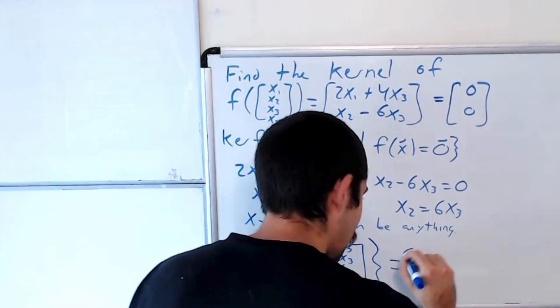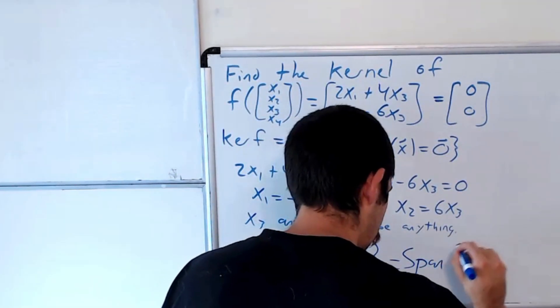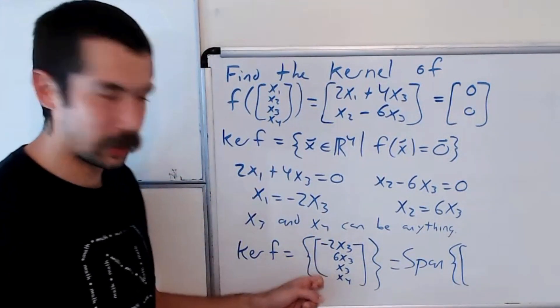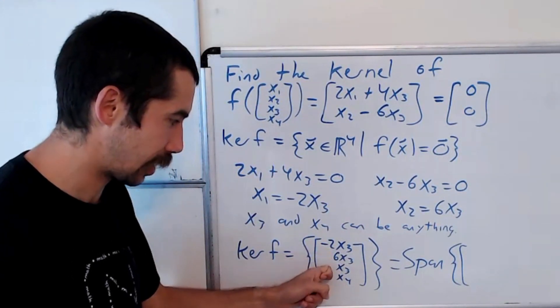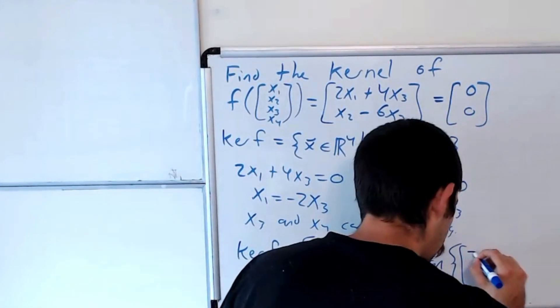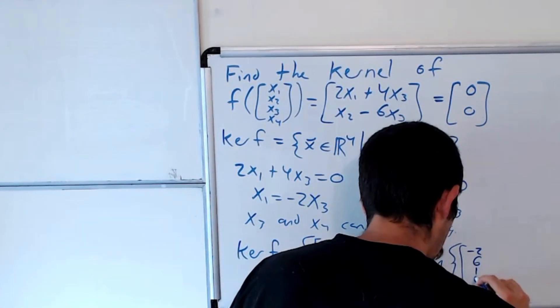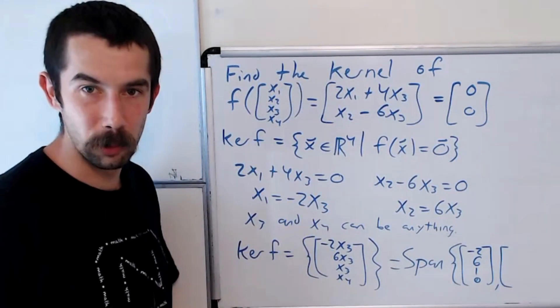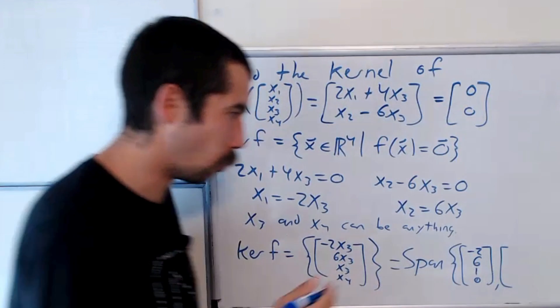Put that another way, we could write that as the span. The first vector would be the coefficients of x3, so negative 2, 6, 1, 0. And the second vector would be the coefficients of x4, both of our free variables, which would be 0, 0, 0, 1.